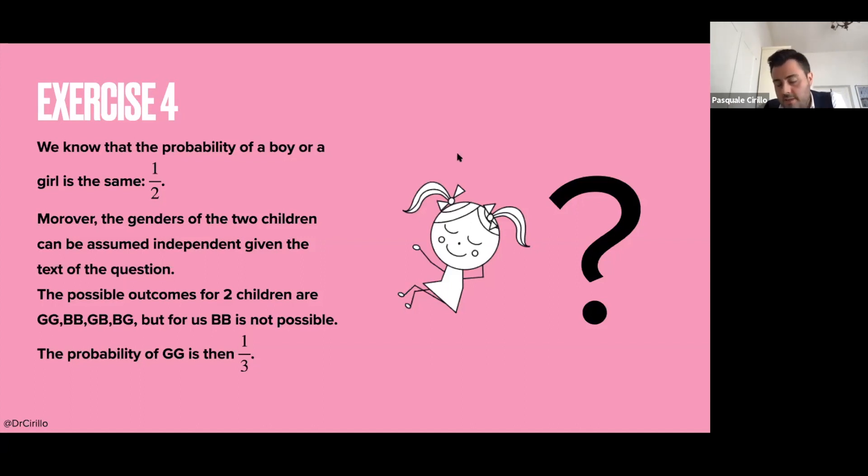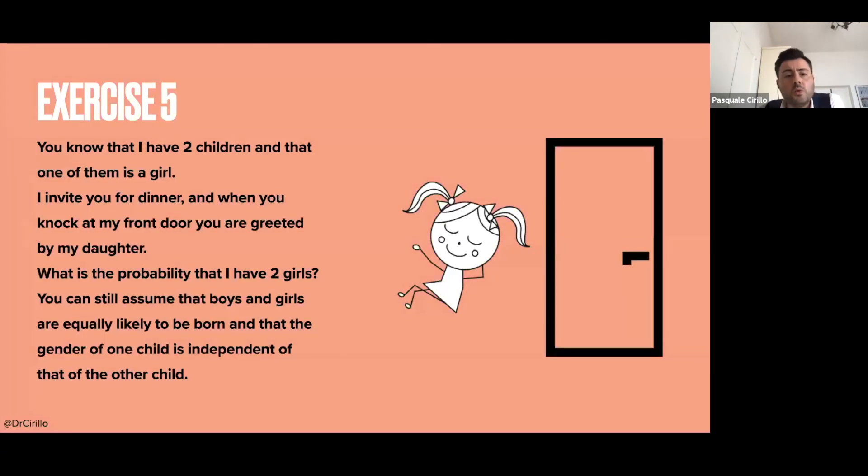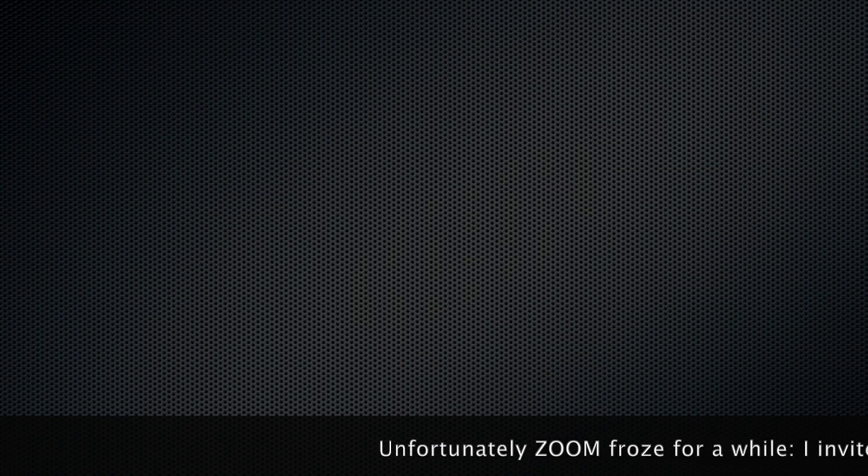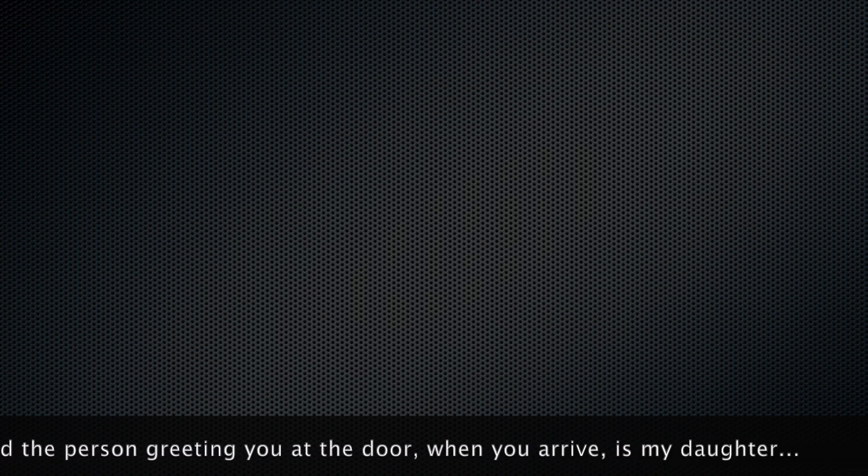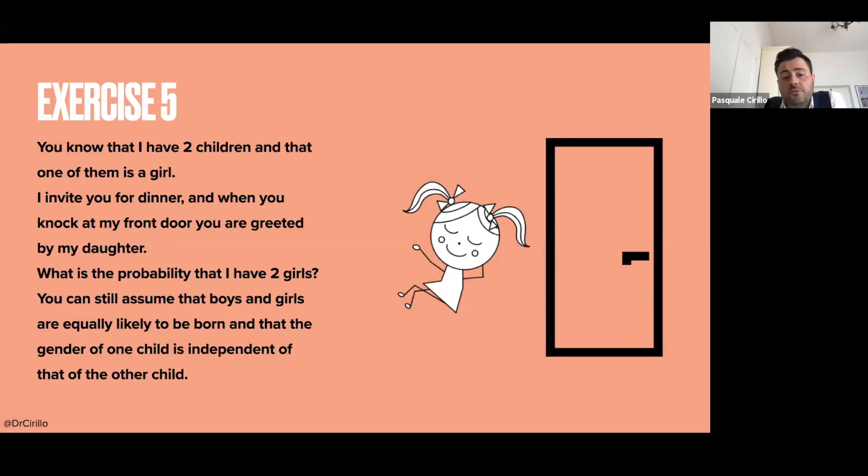Now this exercise is interesting because I can change it a little bit, which is exercise five. The first part is essentially the same. You know that I have two children, and that one of them is a girl. My daughter is not my wife, because obviously you can see the age. So you can rightly assume that this is my daughter.